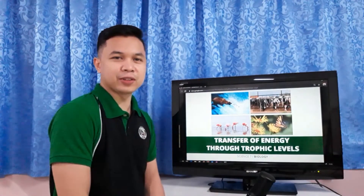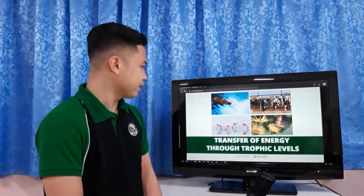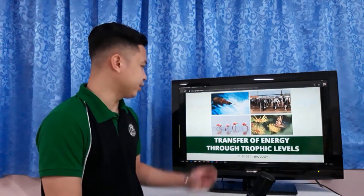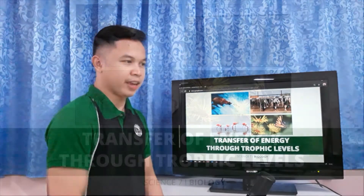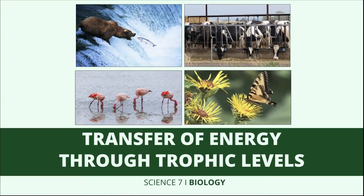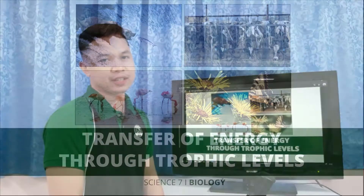Today we're going to learn about transfer of energy through trophic levels. Energy is needed by all organisms to carry out essential life processes. Energy is needed for maintaining a constant body temperature, for movement, and for eating and digesting food.